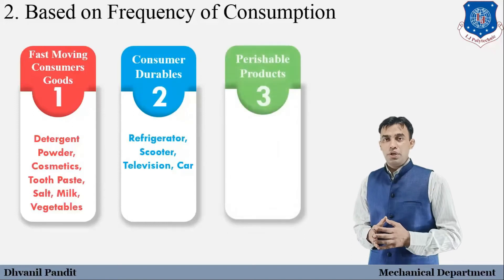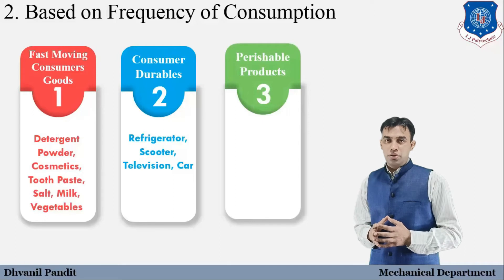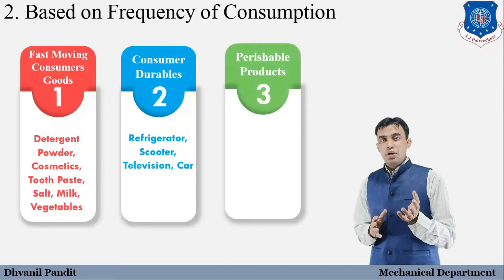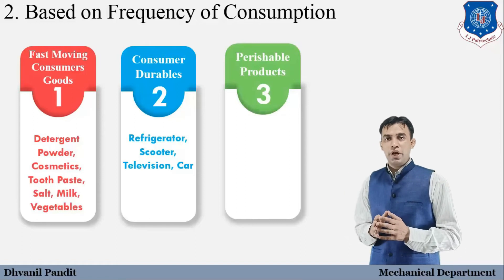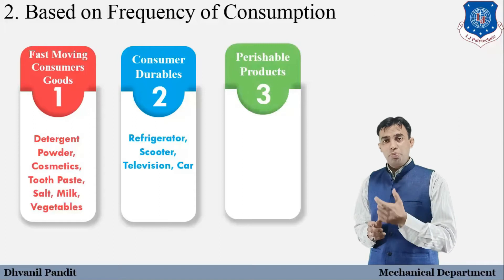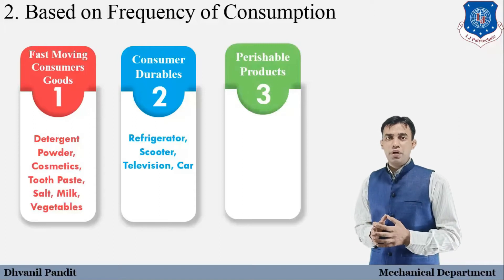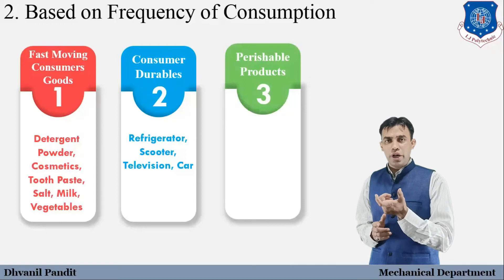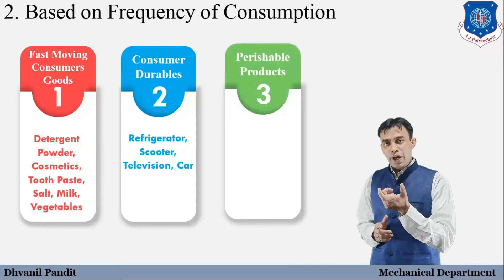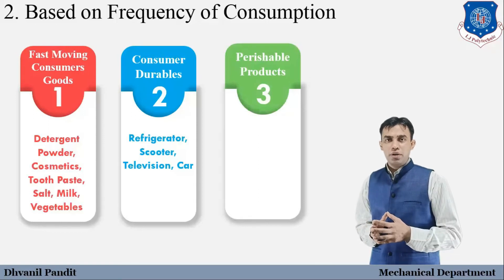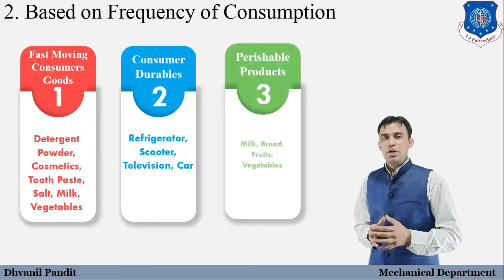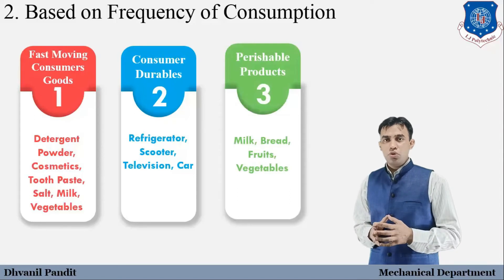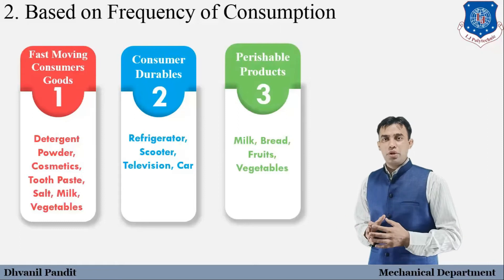The next type is perishable products. Compared to consumer durables, perishable products have a very short useful life. These products expire within a limited duration. Examples include vegetables, fruit, milk, and bread — all of these fall into the perishable products category.